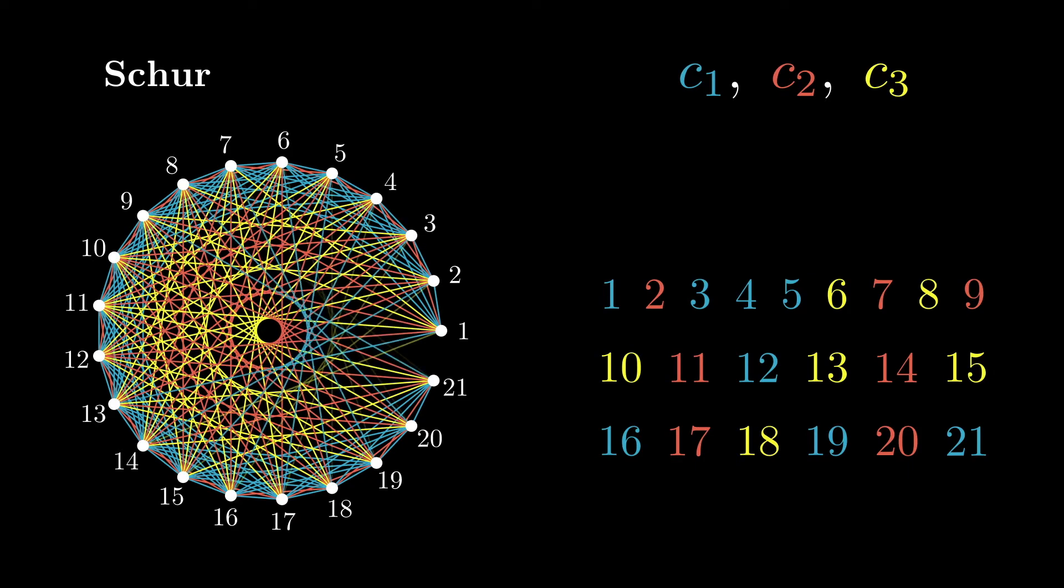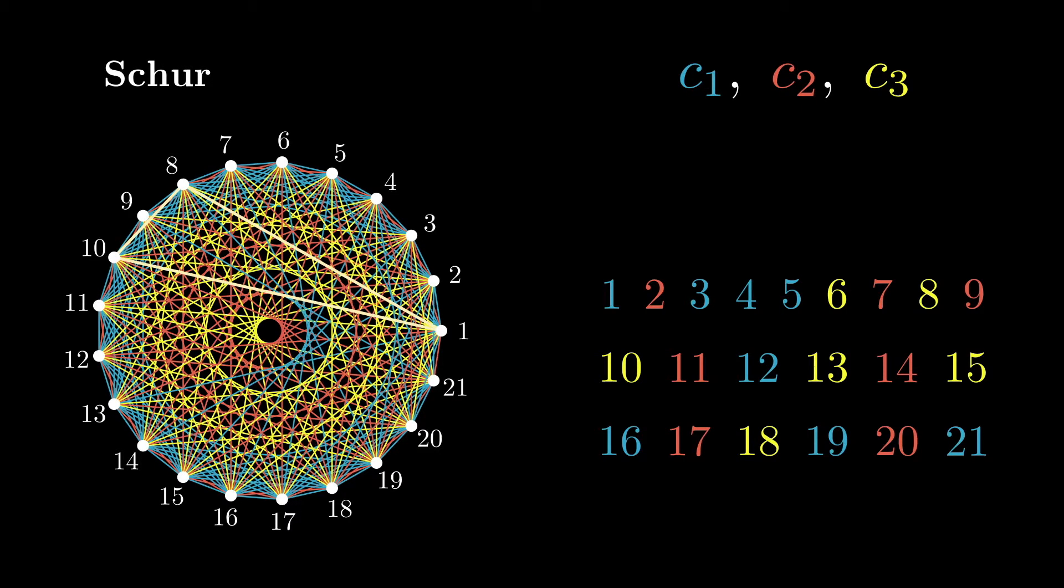Now, because the size of this graph is greater than or equal to the threshold, Ramsey guarantees a monochromatic triangle. The nice thing about a triangle is that the steps between both of the shorter edges add up to those for the longer edge. Because they correspond to 3 of the same colour on the right, we get exactly what we were looking for.